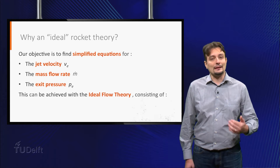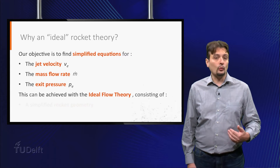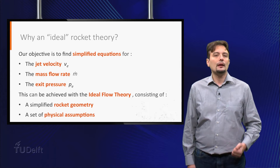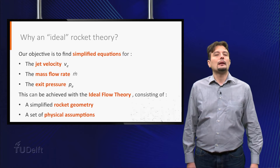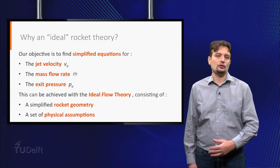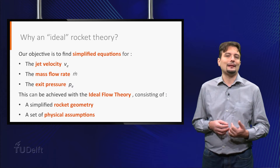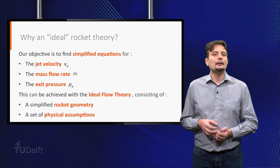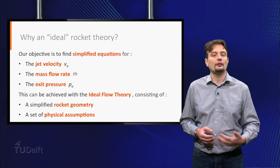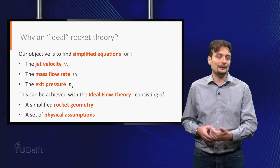We will derive these three equations by means of a model based on two main simplifications. The first one is related to the rocket geometry, while the second one is related to the physical assumptions we make to simplify the equations. In this course, I will show you only the building blocks of the ideal rocket theory and the final equations, without explanation of intermediate steps and mathematical derivations. Keep in mind that the ideal rocket theory applies only to propulsion systems based on thermal expansion of the propellant, and cannot be used in other cases, such as most electric propulsion concepts.